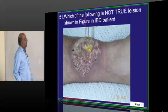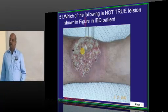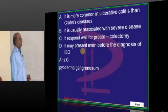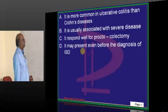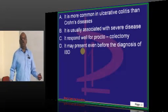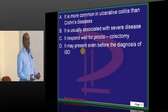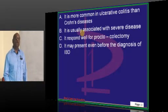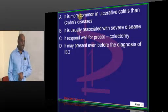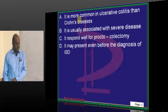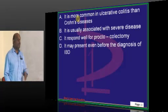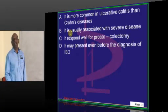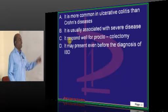Then what is this lesion in an IBD patient? It is pyoderma gangrenosum. If you do proctocolectomy, the pyoderma doesn't resolve and it can present even before the diagnosis. Patients can go to a dermatologist, later on develop dysentery and discover to have IBD. So pyoderma gangrenosum can precede the inflammatory bowel disease. It is more common in ulcerative colitis compared to Crohn's disease.